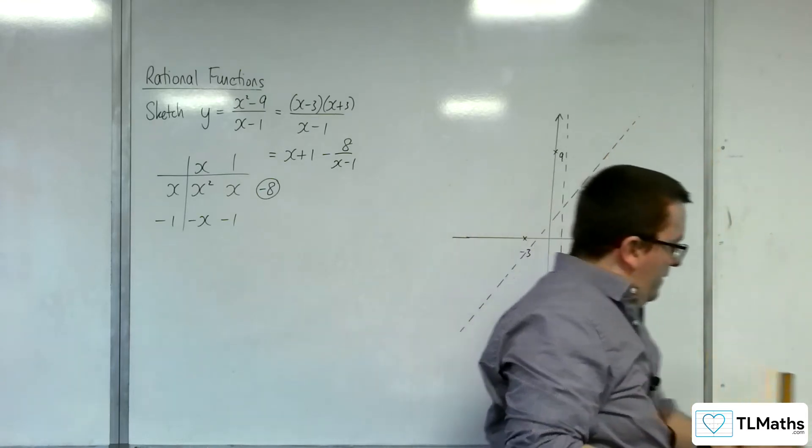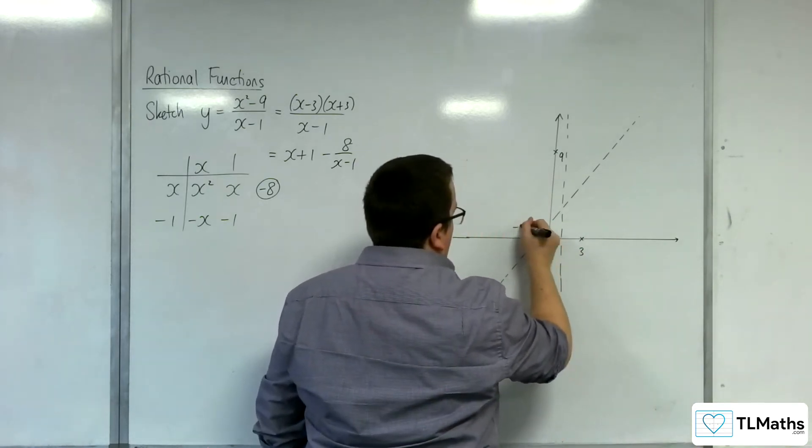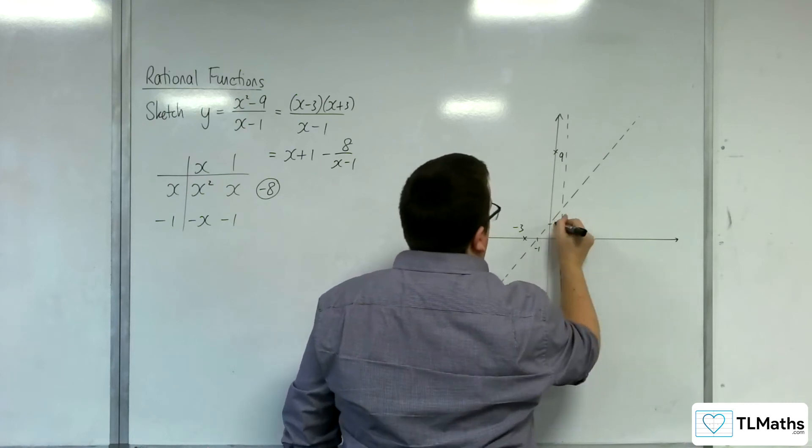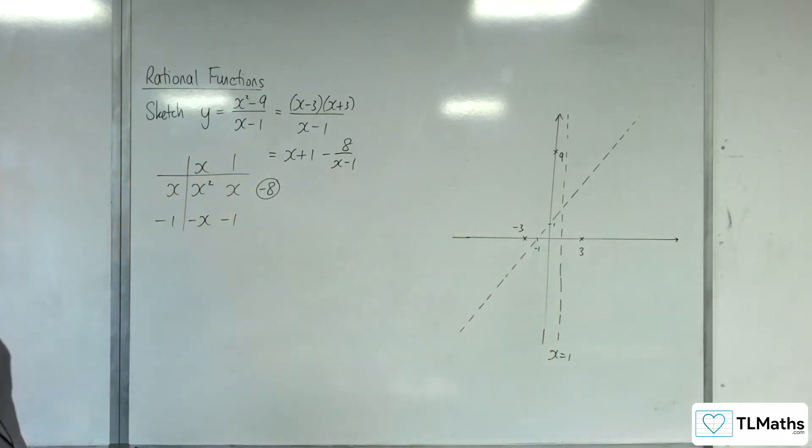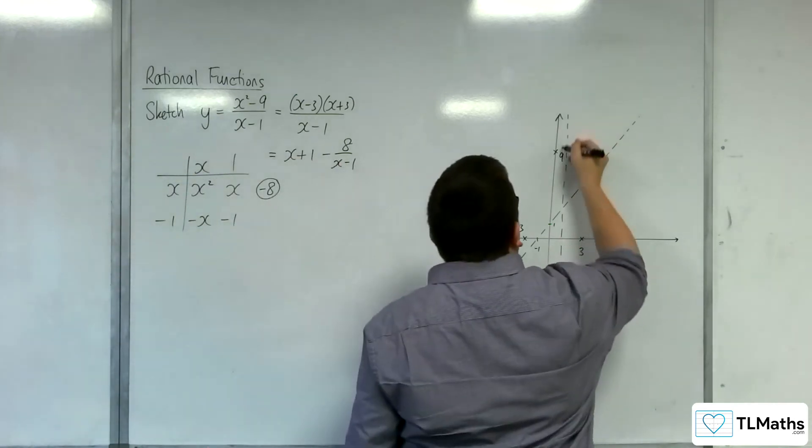So something like that. Let me just move that to there. So that's at minus 1, and that's at 1. So that means that the curve must do something like this.